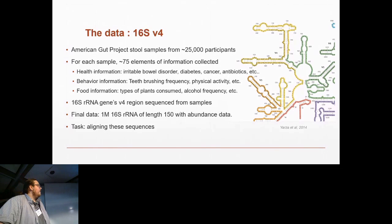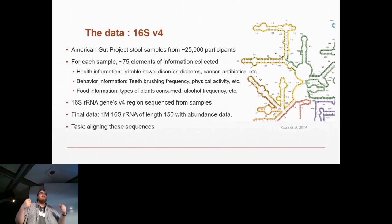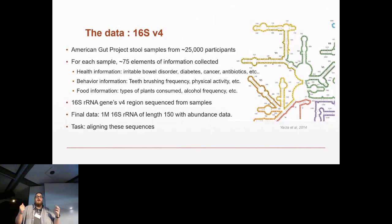The region goes from roughly this loop here, through the yellow regions, up to the start of this stem — basically the yellow region, the first half roughly, that we are working with. The task we have is to align these sequences and eventually see if there's something we can do to try to infer back some of the information we have about the donors of these samples. Because this is a microbiome study, the diversity and specific composition of the microbiome of these stool donors is going to play a role in their health.